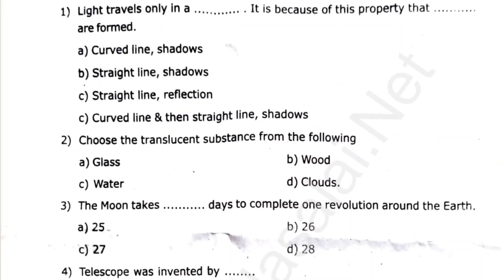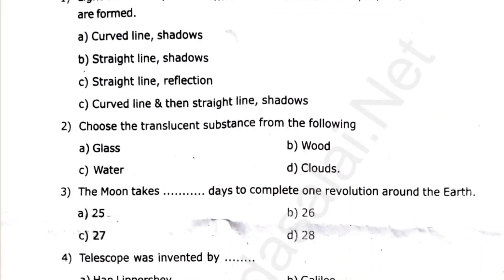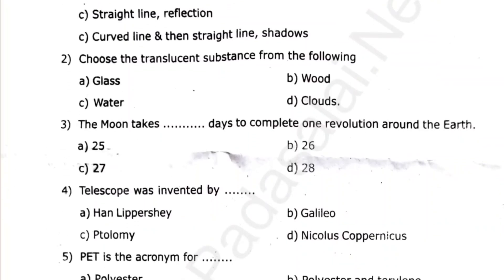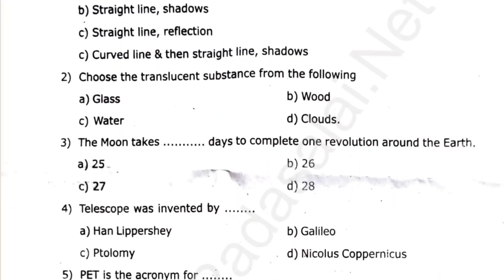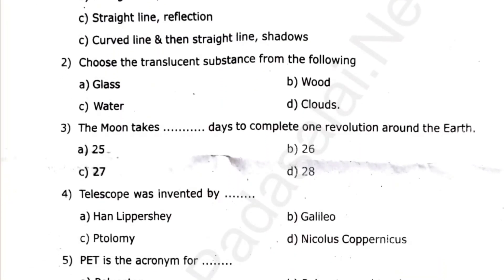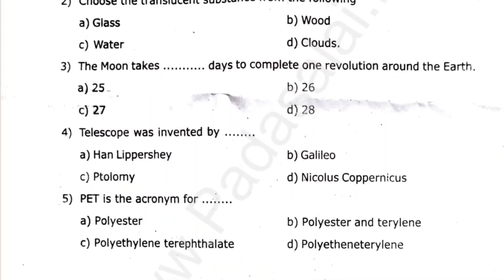First, choose one word. Light travels only in a dash. It is because of this property that dash are formed. Second, choose the translucent substance from the following. Third, the moon takes dash days to complete one revolution around the Earth. Fourth, the telescope was invented by dash.